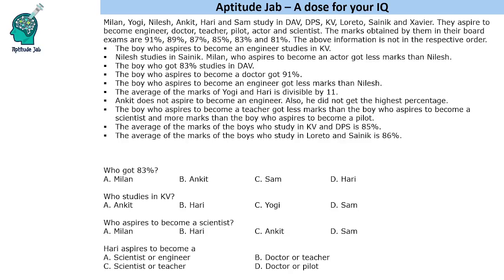If you look at this problem, it's a grid-based puzzle — we have to arrange the data in the form of rows and columns. However, since some statements involve the average marks, this means there is an element of numerical calculation. The best approach in such questions is to make the first column the numerical data one, so let us put 81, 83, 85, 87, 89, and 91, and accordingly fill the remaining values.